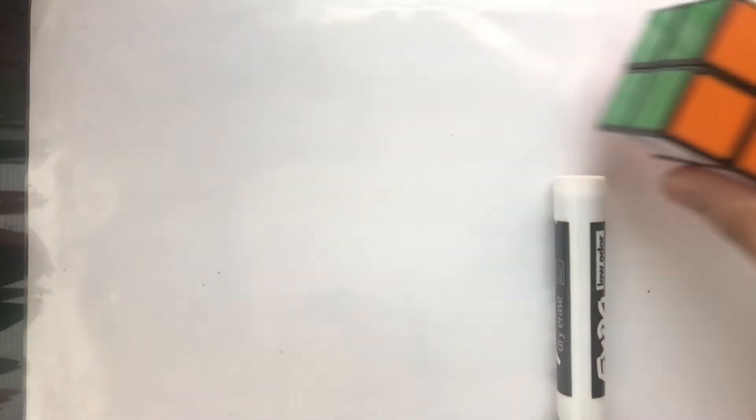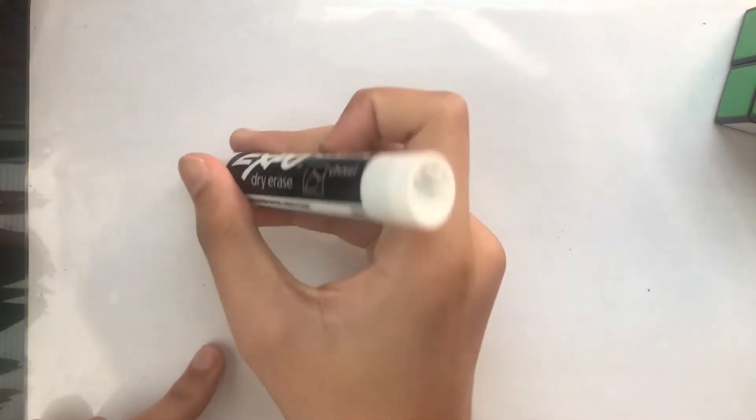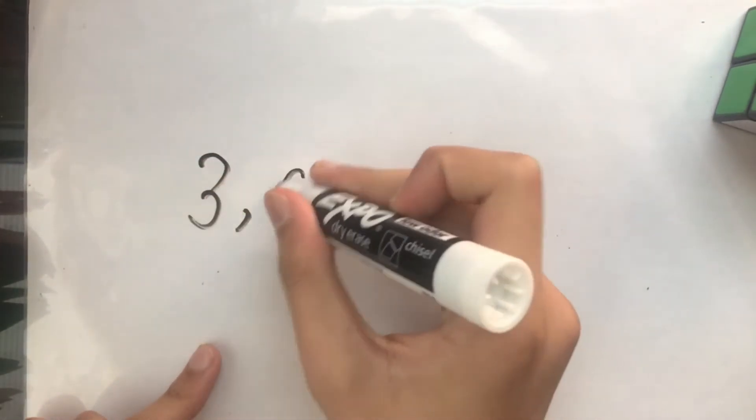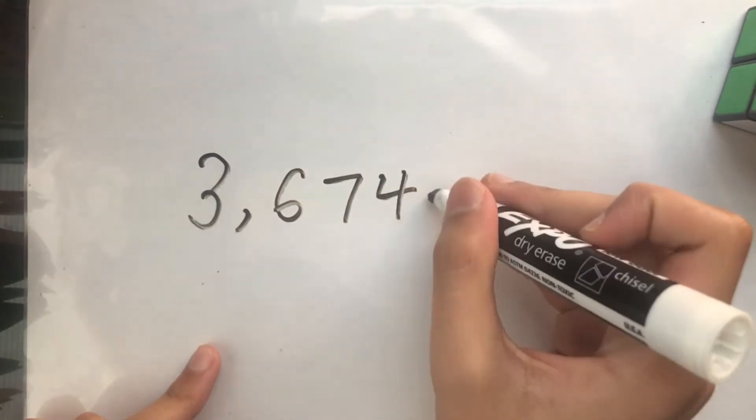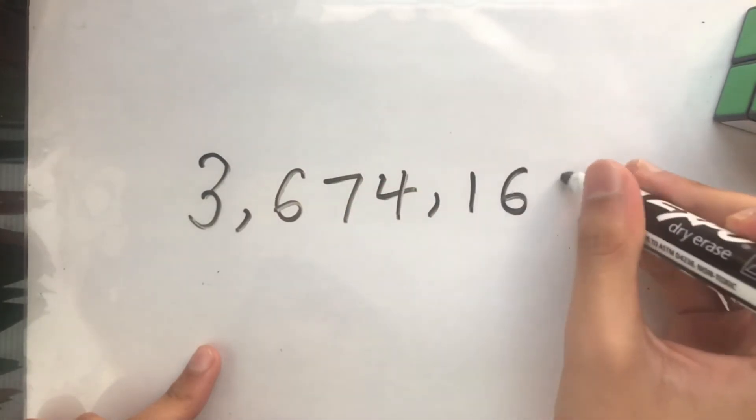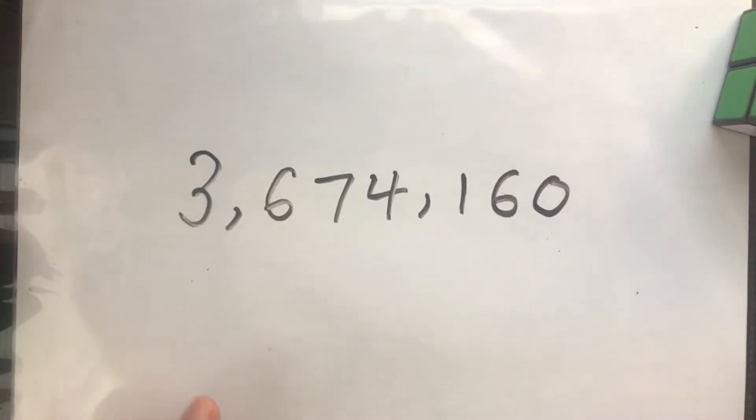So the total number of permutations in a 2x2 Rubik's cube is 3,674,160. And I'll be explaining how you get to this number next.